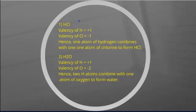In this particular compound, we have two elements. One is hydrogen and the other is chlorine. We know that the valency of hydrogen is +1 and the valency of chlorine is -1. It means that hydrogen atom loses one electron and chlorine atom gains one electron.